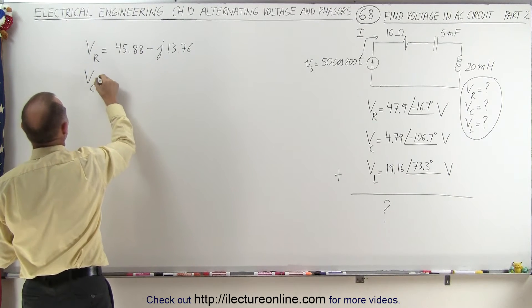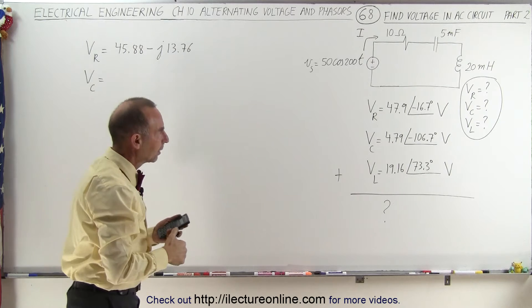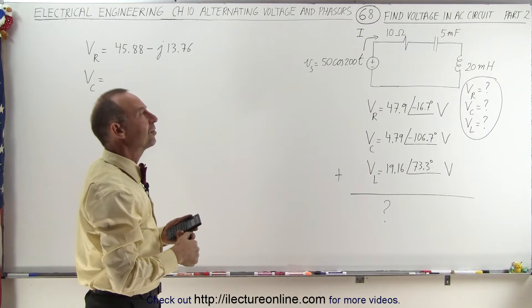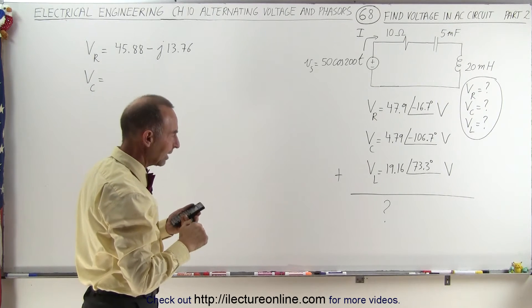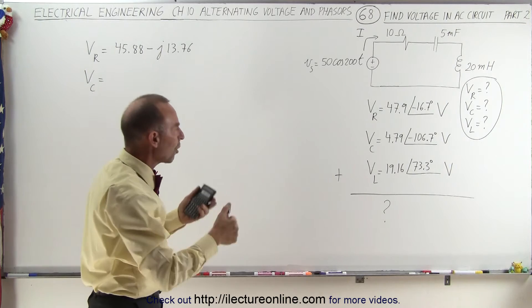If we take the voltage across the capacitor, we can do the same thing. So we have minus 106.7 degrees. Now to get a good feel for that, let's go ahead and draw the phasors of the three voltages here.